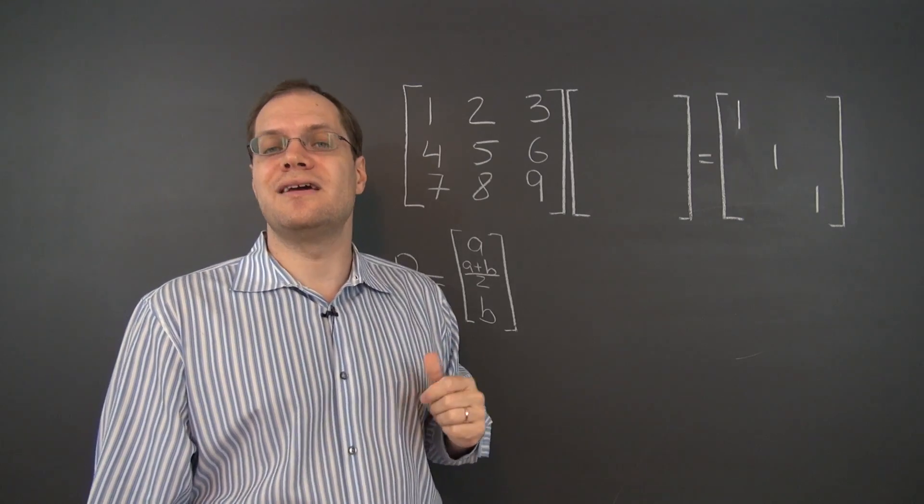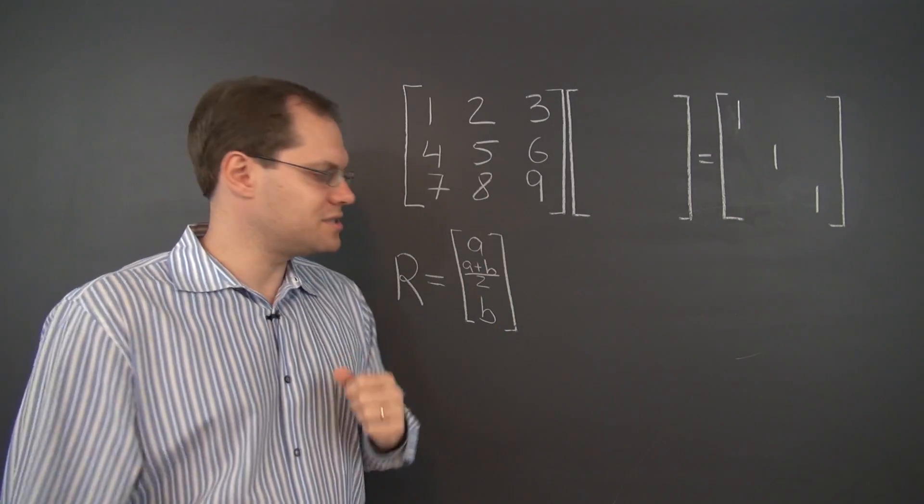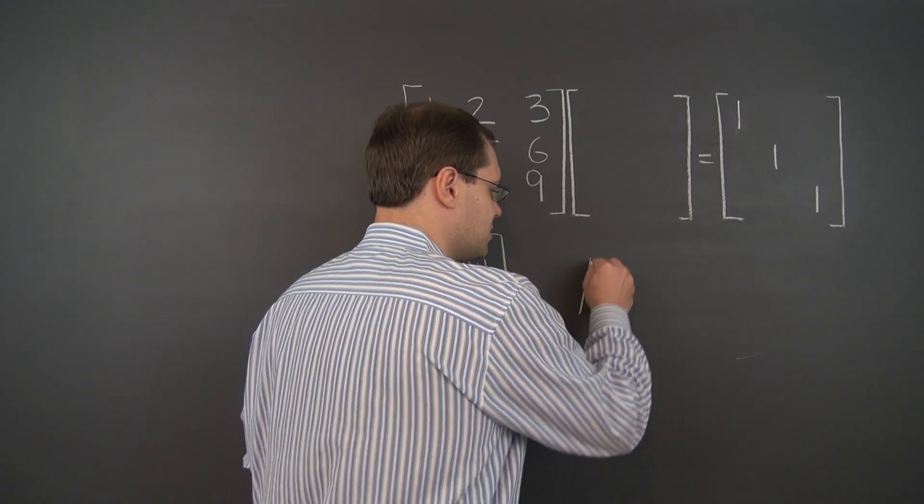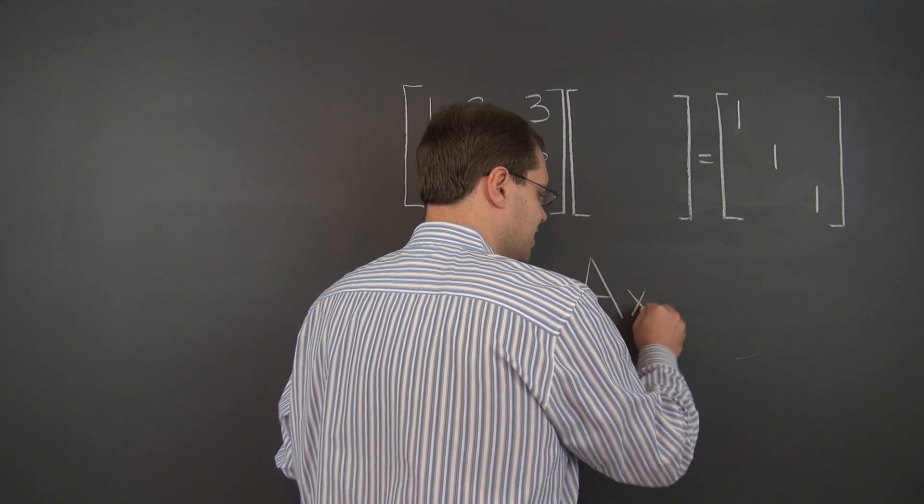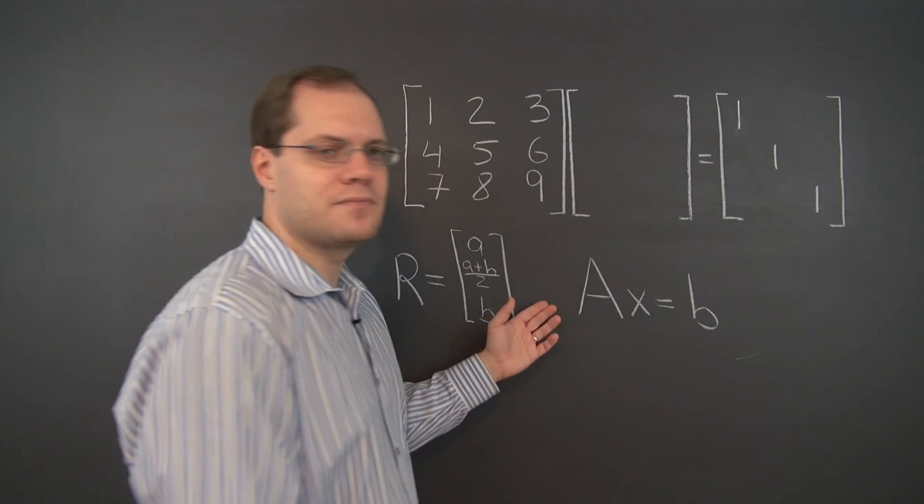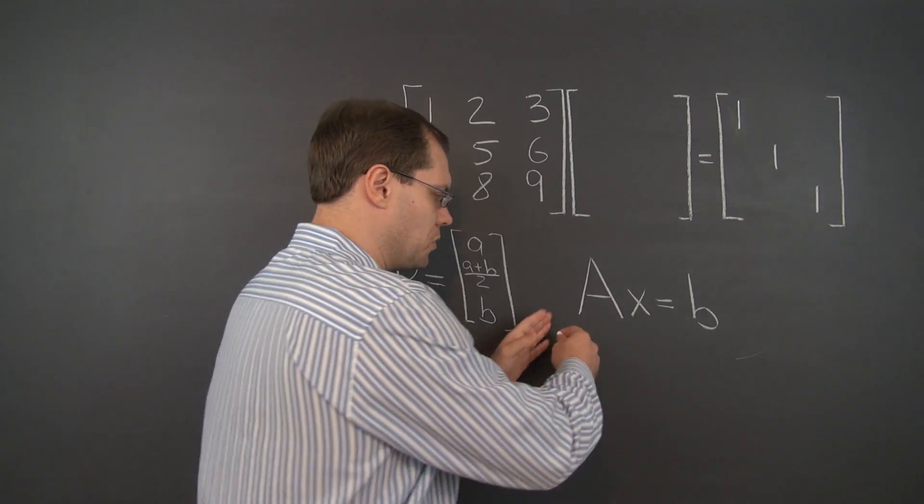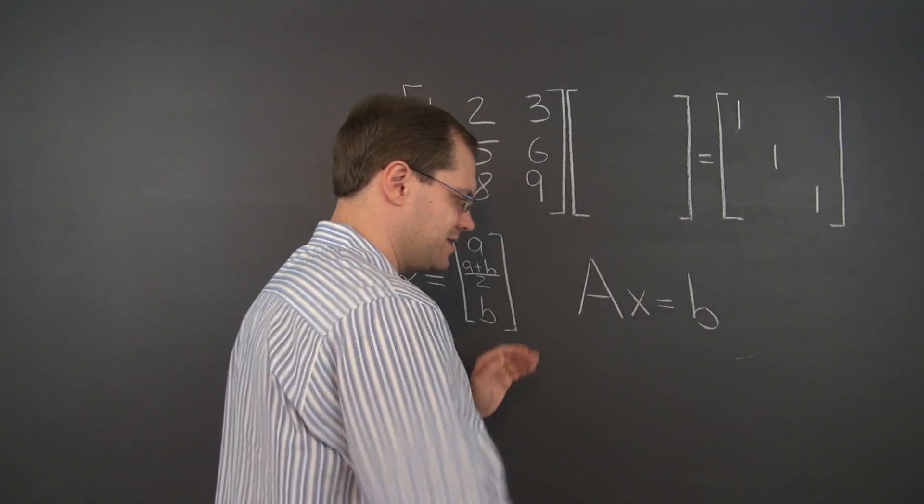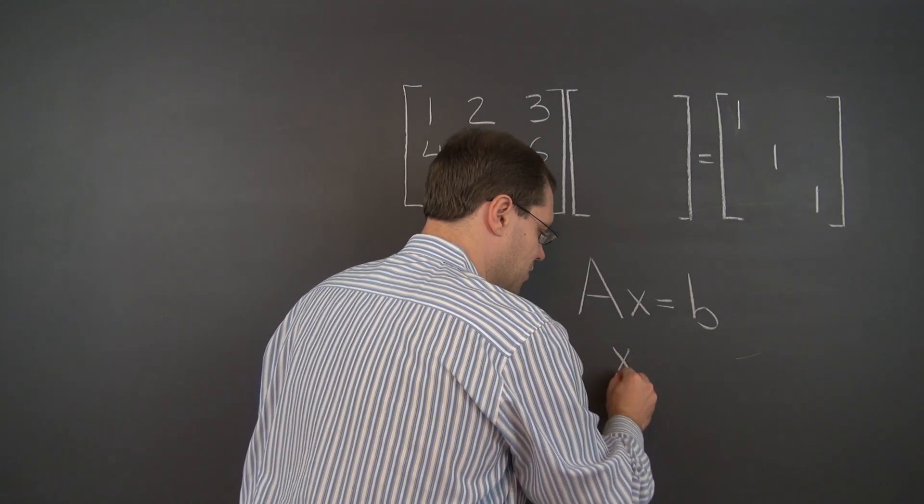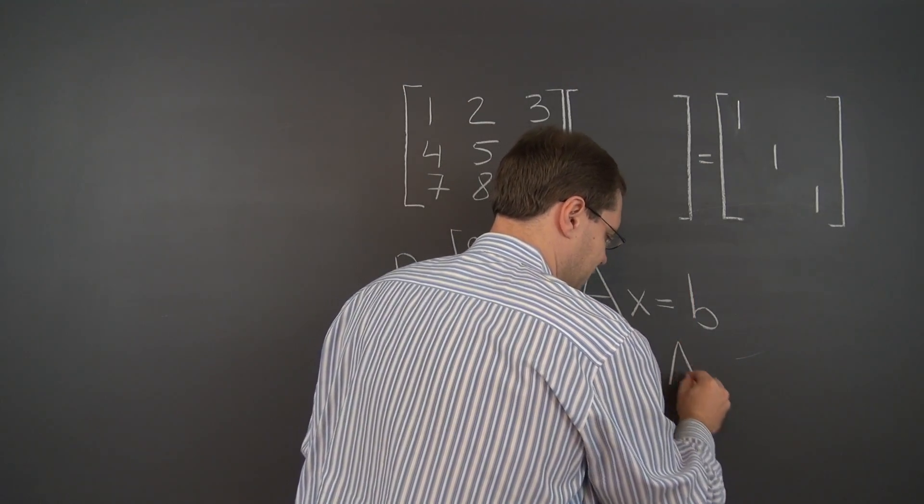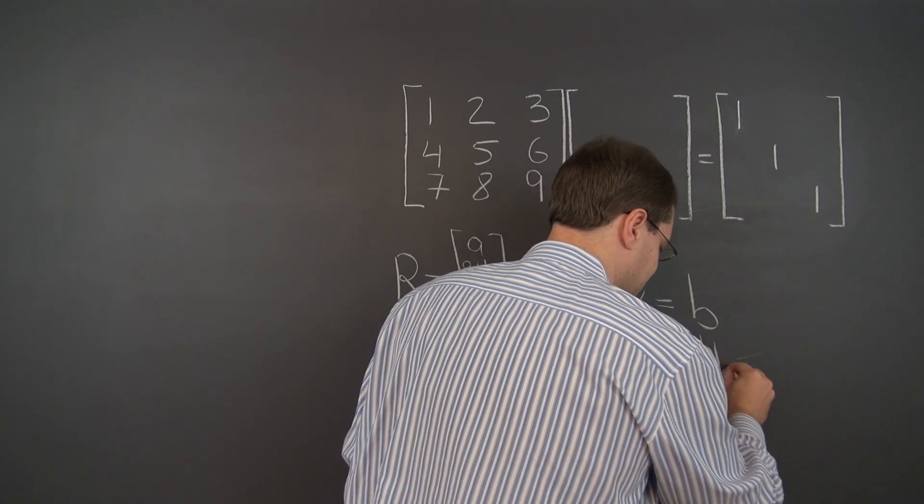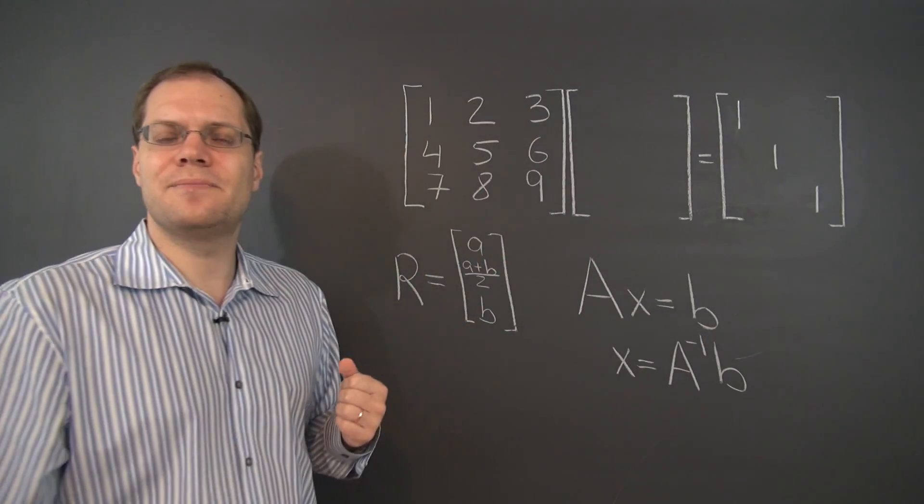And if there was such a thing as the inverse for this matrix, just think about the implications. Suppose this matrix was used in the system of equations AX equals B. And if it somehow had an inverse, we would multiply both sides by that inverse consistently on the left, and we would have X equals A inverse B. This is something we've done several times already. And think about the implications.